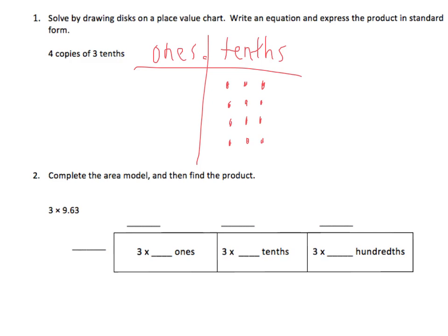Now I know that 10 tenths is equal to 1 one. So I'm going to regroup 10 of those tenths into my ones place. So 3, 6, 9, and 1 from the bottom makes 10. 10 tenths is equal to 1 one. So now I have 1 in my ones place and 2 left over in my tenths place. When I bring down the decimal, it gives me my answer in standard form: 1 and 2 tenths.